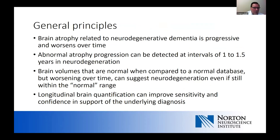Some general principles related to neurodegeneration in imaging: brain atrophy related to an underlying neurodegenerative process is progressive and will worsen over time. Atrophy in neurodegeneration occurs relatively fast compared to normal aging — even at intervals of one year or 18 months, one can frequently see changes in regional atrophy patterns. When we're talking about volumetric MRI, it's important to consider that brain volumes may appear normal compared to a normative database but appear to be worsening over time, which can suggest neurodegeneration even if measures are technically in a normal range.